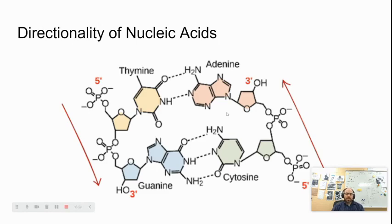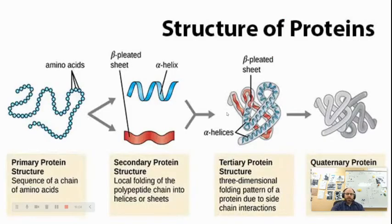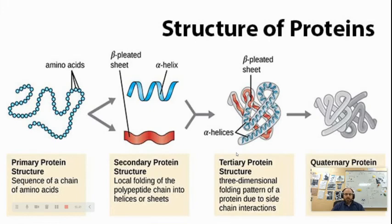With proteins, directionality is very similar. The N-terminus and C-terminus of amino acids are important for protein structure. Proteins start in a primary structure — basically a string of amino acids. Because of the chemical composition of each amino acid, the protein folds up to form secondary structures like helices and pleated sheets. Those helices and sheets join together to form a tertiary structure, which is a three-dimensional protein. For many proteins, this is the end game — a three-dimensional shape that determines function. For other proteins, multiple tertiary structures join together to form a quaternary protein structure.